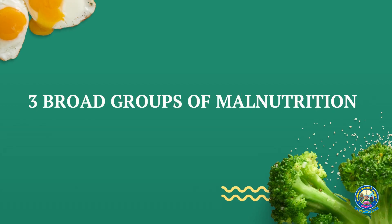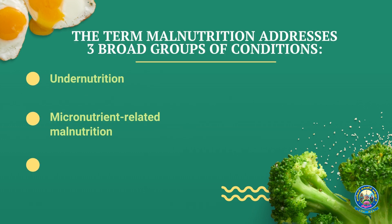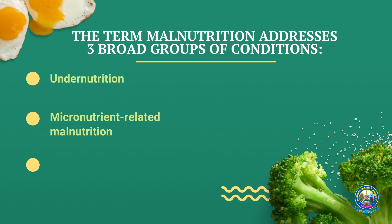The term malnutrition addresses three broad categories: undernutrition, micronutrient-related malnutrition, and overnutrition — which includes overweight, obesity, and non-communicable diseases.